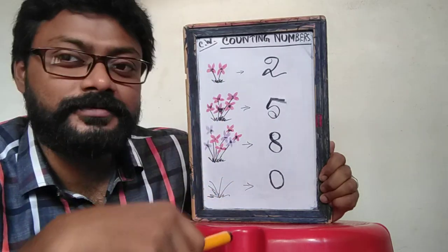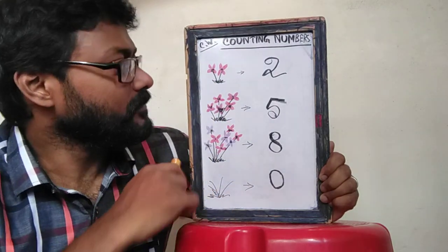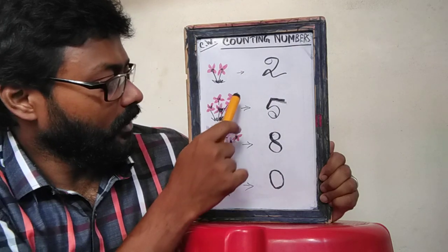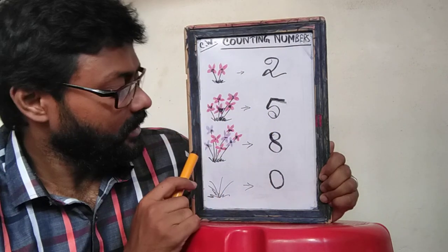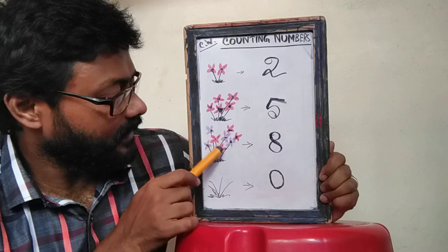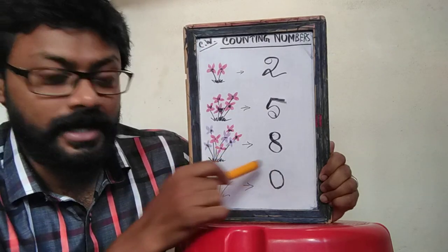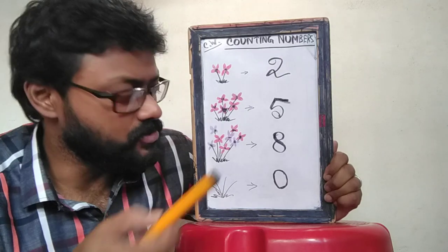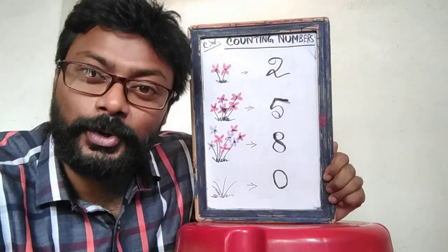Let's revise it from the top. There are 2 flowers. And there are 1, 2, 3, 4, 5 flowers. And there is 1, 2, 3, 4, 5, 6, 7, 8 flowers. And the last one, there are no flowers, so we write 0.